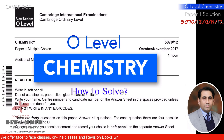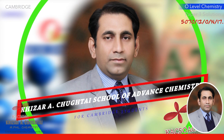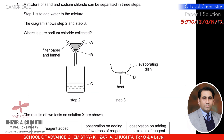Bismillahirrahmanirrahim, welcome to School of Advanced Chemistry. I am Khadr Choktay. Today I'm going to explain the October/November 2017 Paper 1, Variant 2. Let's get started. Question number one: a mixture of sand and sodium chloride can be separated in three steps.